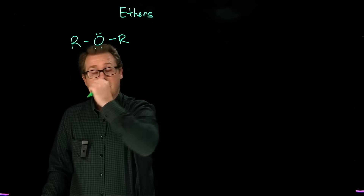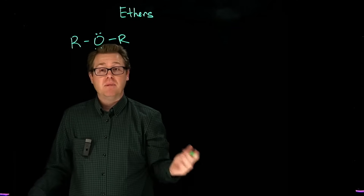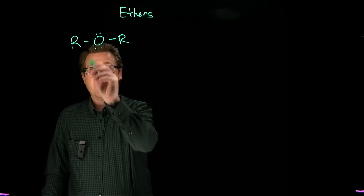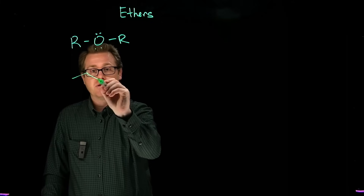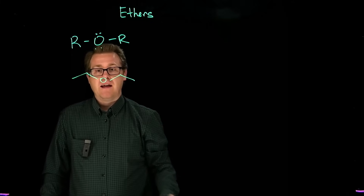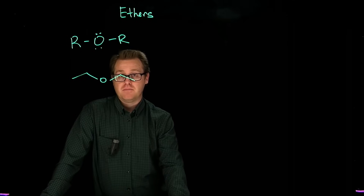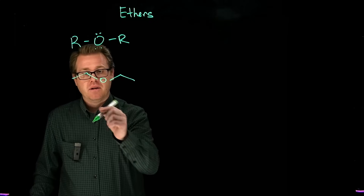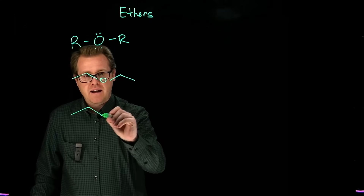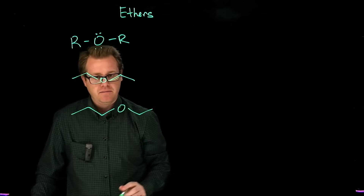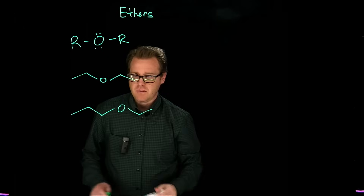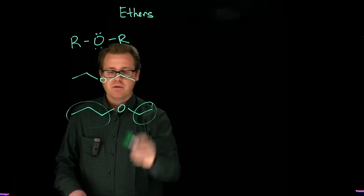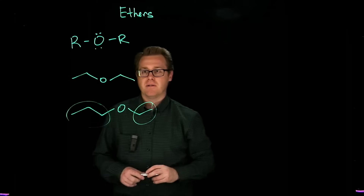These R groups right here, they can be the same or they can be different. If they're the same - let's say these R groups are ethyl groups - then we have a diethyl ether. That would be a symmetrical ether. But what if we had something where this side has three carbons and this side has two? That would be an unsymmetrical ether.